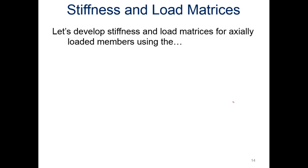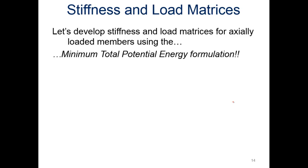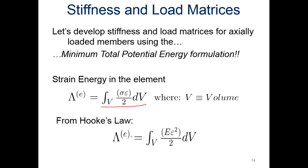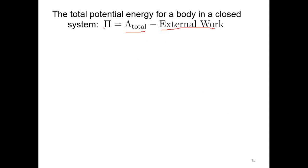Let's develop our stiffness matrix and nodal force matrices for axial loaded members using the minimum total potential energy formulation. To accomplish minimum total potential energy, we look at the strain energy — an integration over the volume of stress times strain over two. From Hooke's law we substitute in the modulus times strain for stress, giving us the modulus times strain squared. The total potential energy for a body in a closed system is the strain energy minus the external work done.